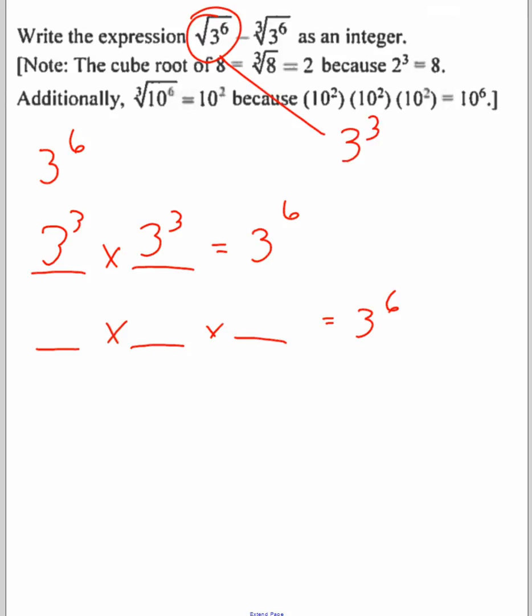Now let's think about what number times itself three times will give me 3 to the 6. Think about the power to a power rule. What number adds up to 6? That's 2 plus 2 plus 2. So the cube root of 3 to the 6 is 3 to the 2. This question is just asking you what's 3 to the 3 minus 3 to the 2, or what's 27 minus 9? The answer is 18.